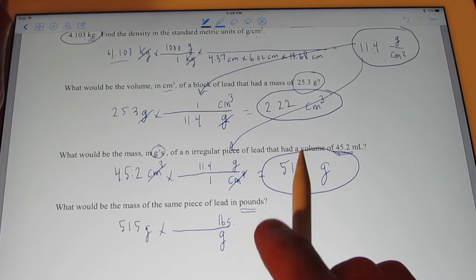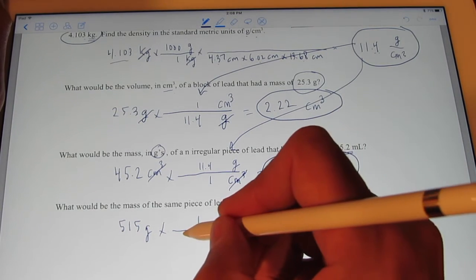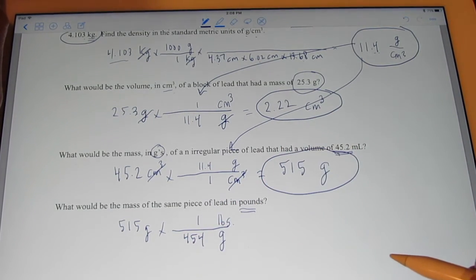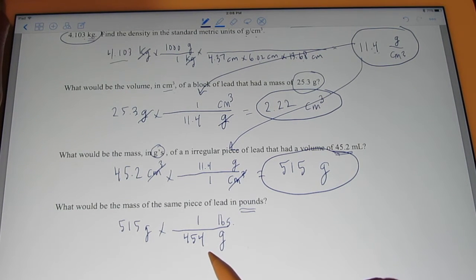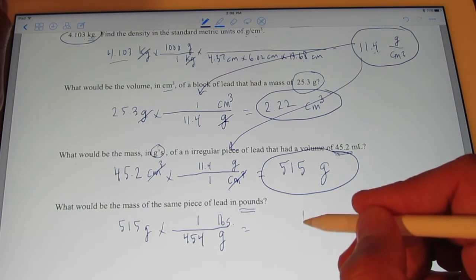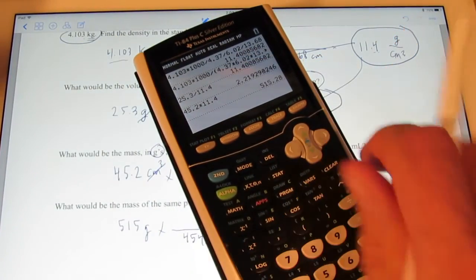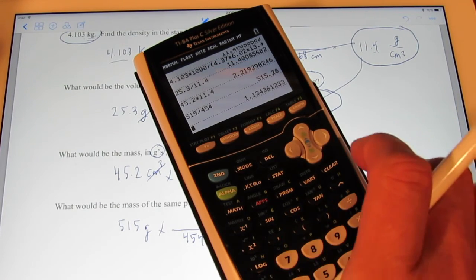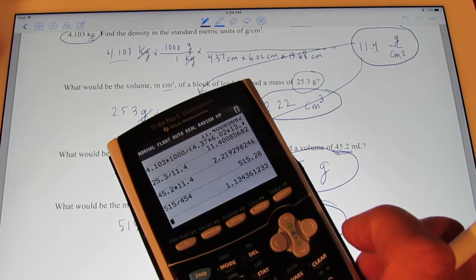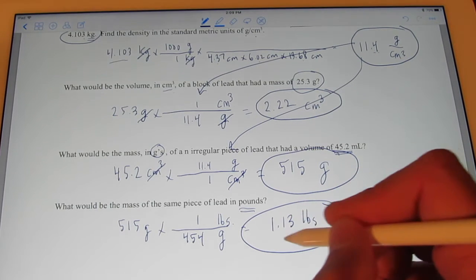Yeah, go ahead and flip your notebook back a few pages. Didn't I tell you earlier that one pound is 454 grams to three significant figures? So, one pound is 454 grams. That's on the bottom. So, we're going to divide by it. So, let's see what that piece of lead would weigh in pounds. So, we have 515 divided by 454 to three significant figures. How does 1.13 pounds? 1.13 pounds.